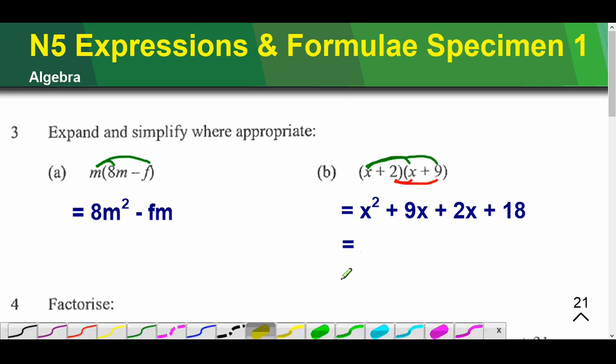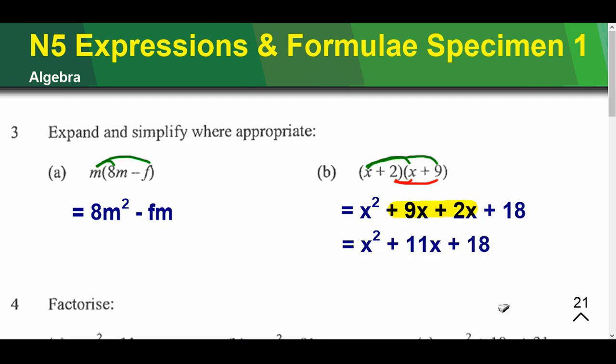At this point, you just want to simplify that middle bit. You can see plus 9 plus 2, which makes plus 11. So, finish it off like that.